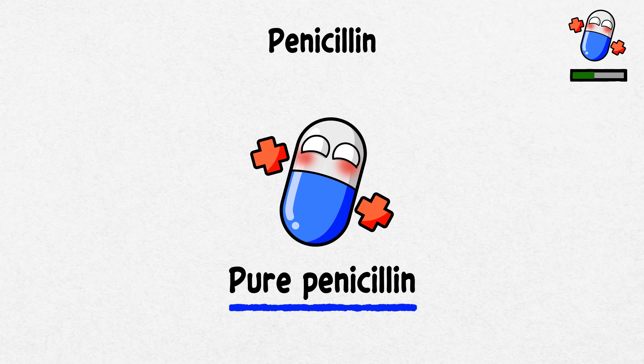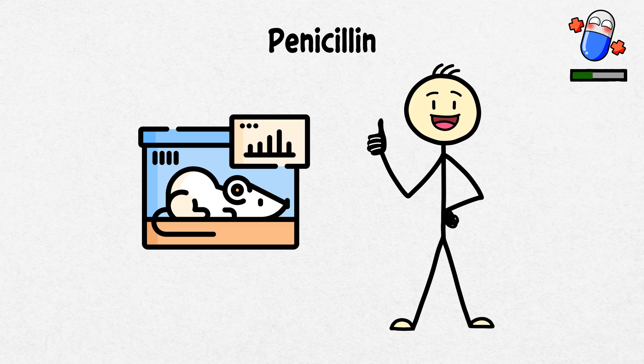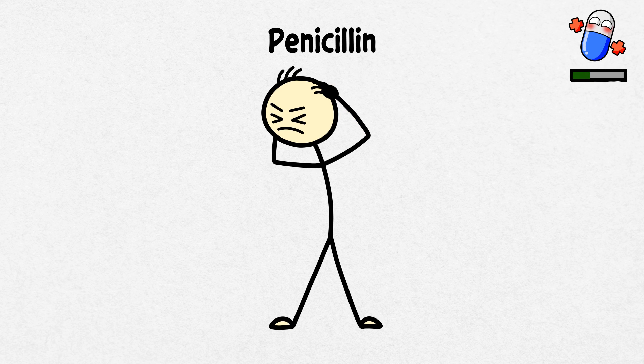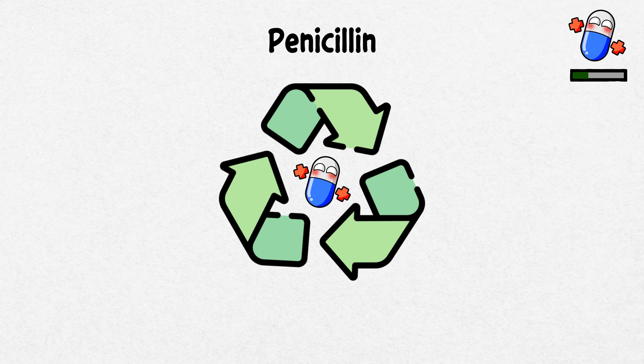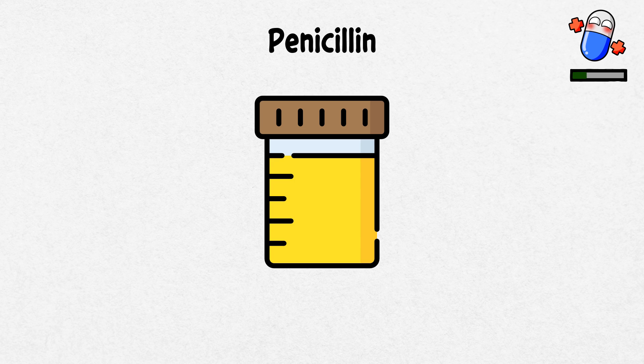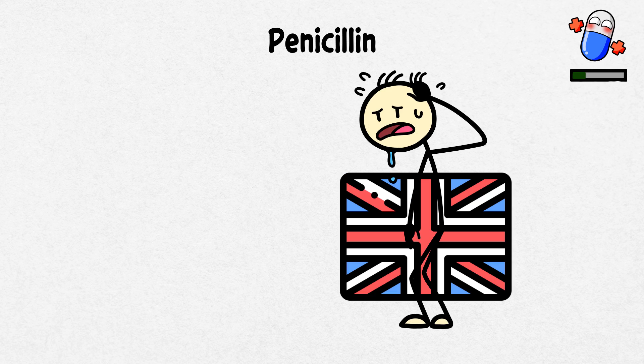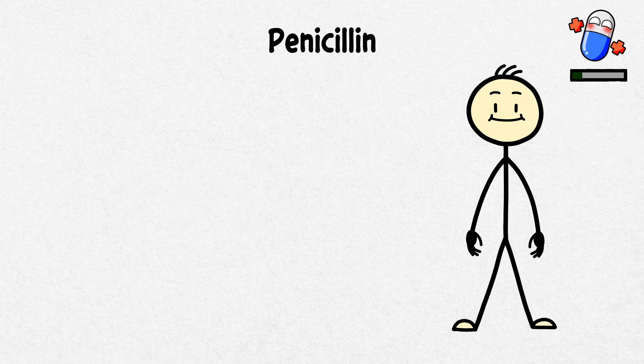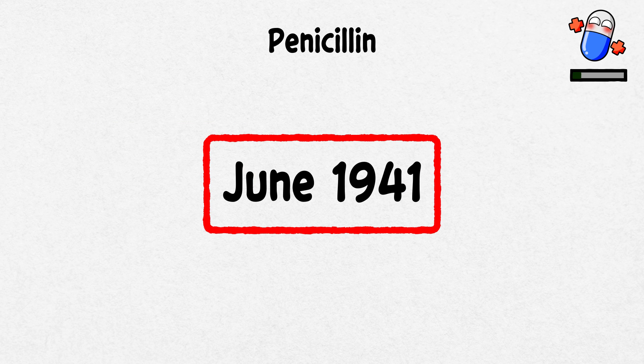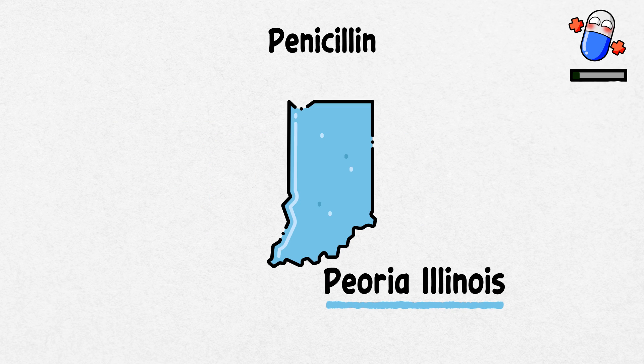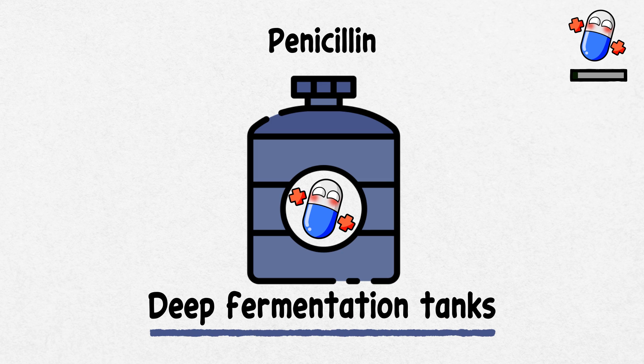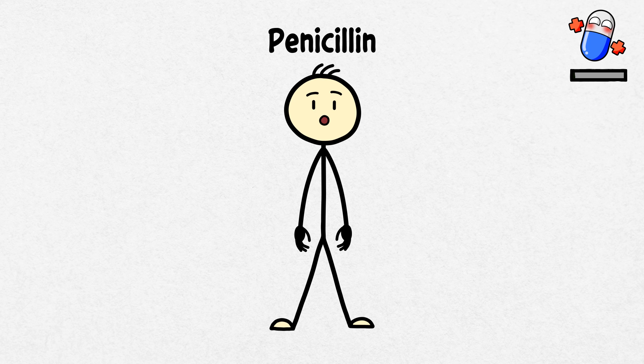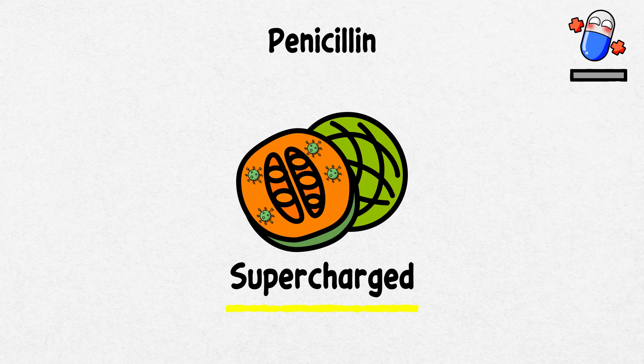Despite initial success in animal trials, producing enough for human use was tough, so much so that they had to use bedpans and bathtubs for storage. They even recycled penicillin from patients' urine. With World War II raging, British industry couldn't handle mass production, so the team started seeking help from elsewhere. Fleming then took penicillin to the US in June 1941 to scale up production. In Peoria, Illinois, experts improved on it using deep fermentation tanks. Adding corn-steep liqueur led to greatly increased yields. They also stumbled upon a supercharged strain of mold in a rotting cantaloupe.